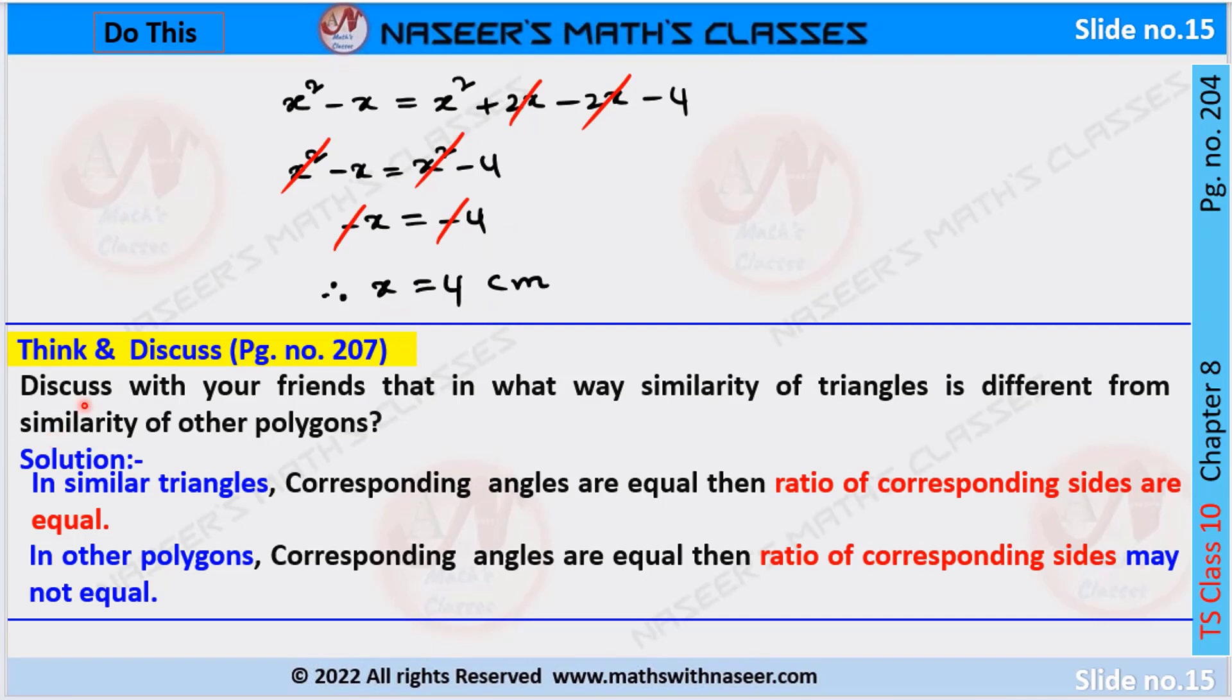Next one, think and discuss page number 207. Discuss with your friends that in what way similarity of triangle is different from the similarity of other polygons.